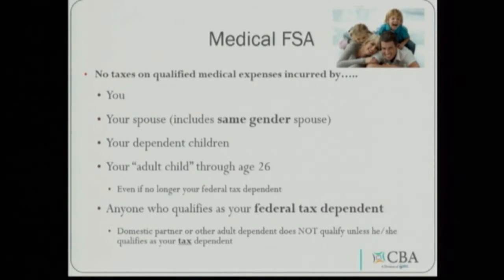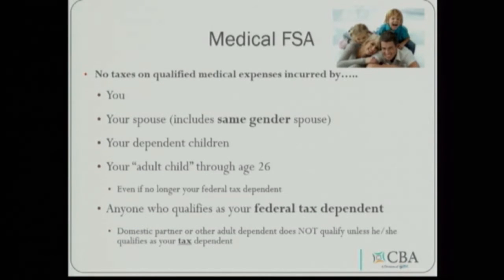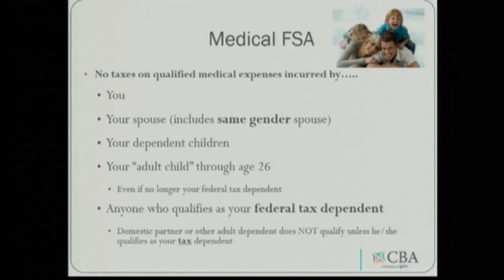There are no taxes on qualified medical expenses incurred by you, your spouse — including same-gender spouses — your dependent children, your adult child through age 26 even if they're no longer your federal tax dependent, or anyone else who qualifies as your federal tax dependent. Domestic partners or other adult dependents that do not qualify as your tax dependent should not have money set aside for their expenses.